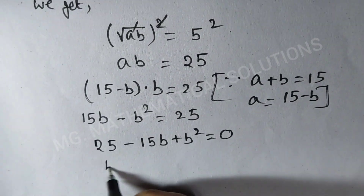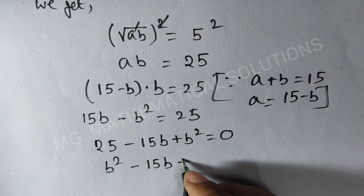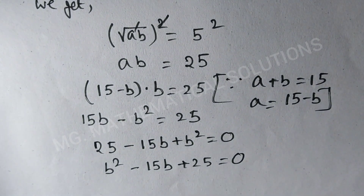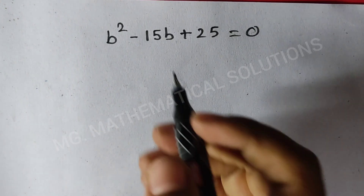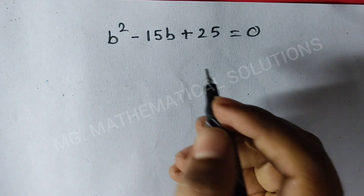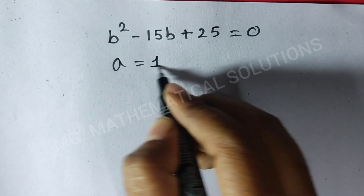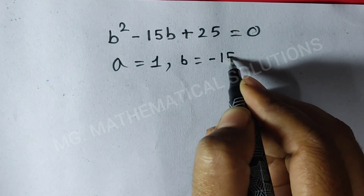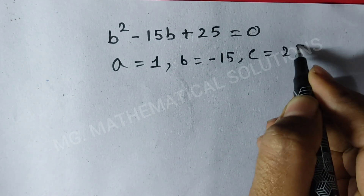So b squared minus 15b plus 25 equal to 0. Now we use the Sridharacharya formula to solve this quadratic, where a equal to 1, b equal to minus 15, and c equal to 25.